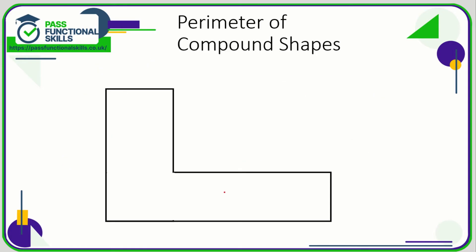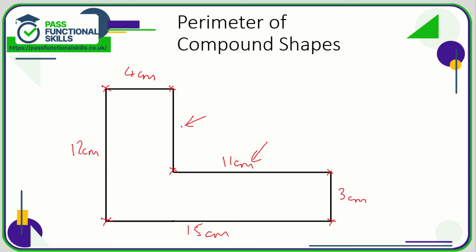Be careful with the perimeter of compound shapes — it's all the side lengths added up, but sometimes they don't give you every side. For example, they might give you 15 across the bottom, 12 across the top, four centimeters here, and three centimeters here, but not give you the remaining two sides. If it's 15 from point to point and four centimeters on one section, then the missing horizontal side is 15 minus four, which is 11.